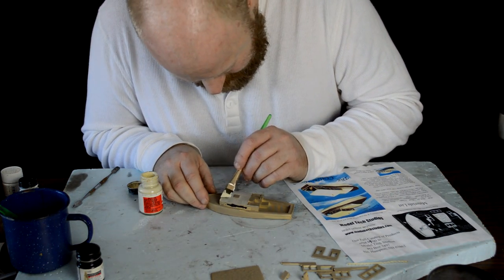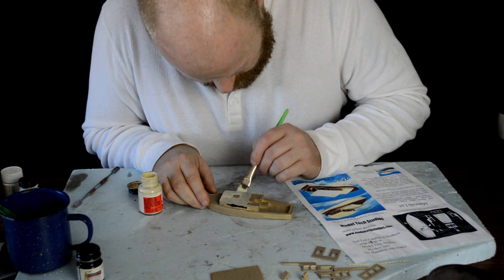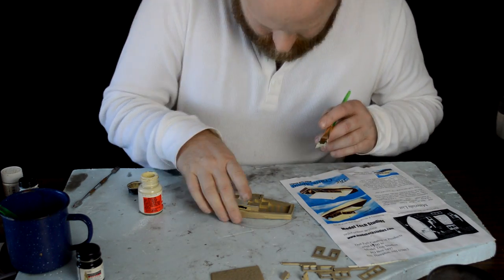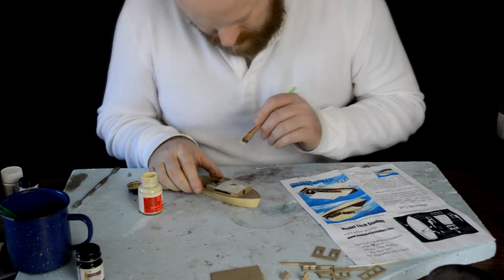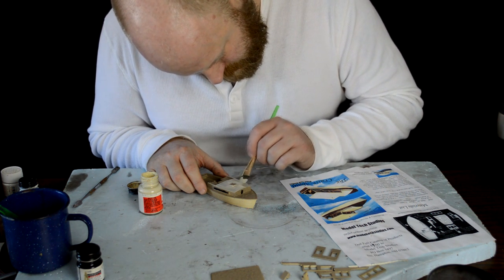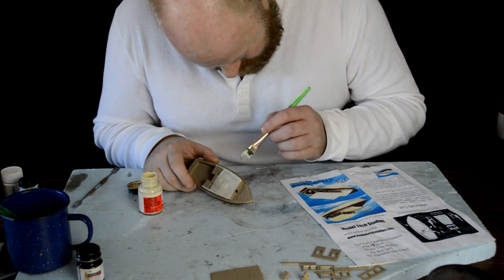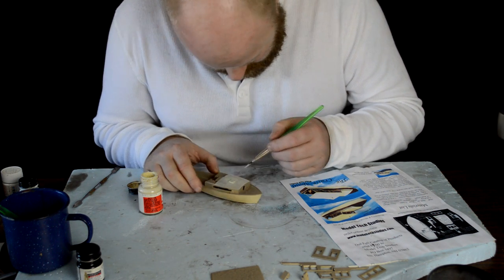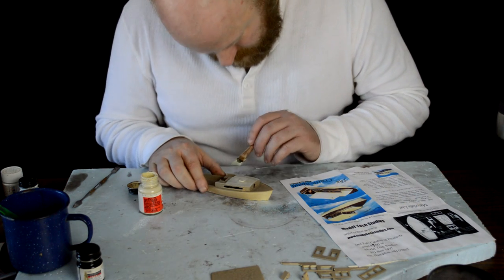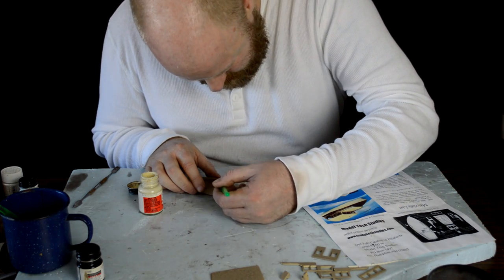I next move on to the white part of the boat, and I use polyscale aged white. I don't want a nice, crisp, clean white like it's a freshly painted boat. I want this boat to look like it's had many years on the water. I also want to get the first coat of white on as soon as possible, because there's going to be about two or three coats to get it to be a solid white.